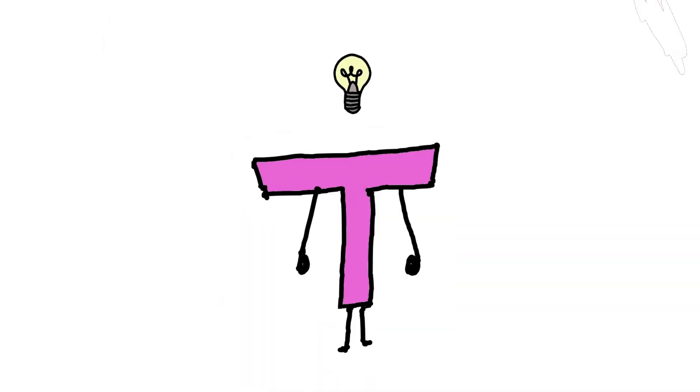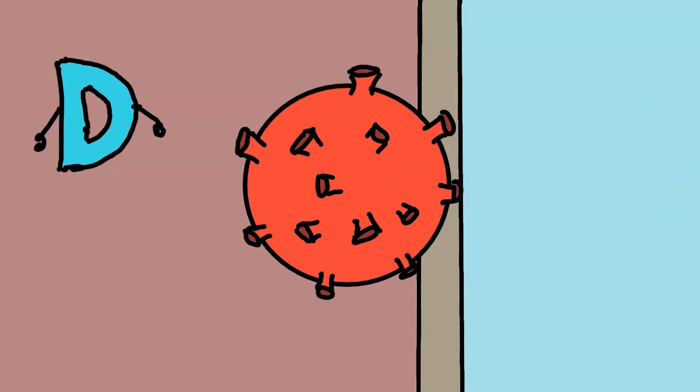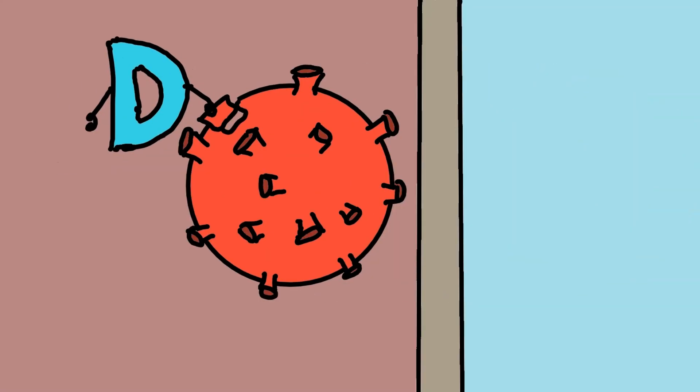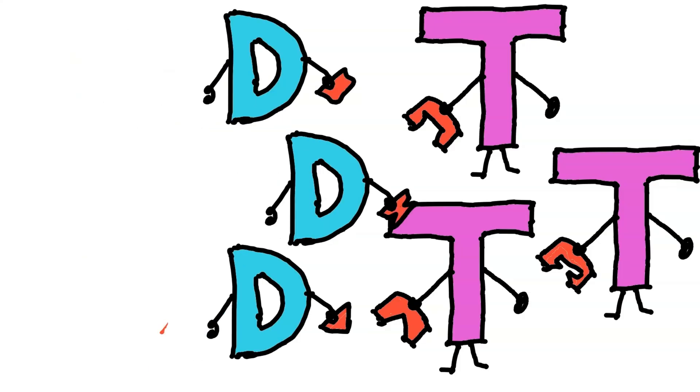But B cells aren't working alone. Another key player in the adaptive immune system is the T cell. Unlike B cells, T cells don't release antibodies. When a virus enters the body, dendritic cells grab pieces of it called antigens and carry them to the lymph nodes where they present them to T cells.